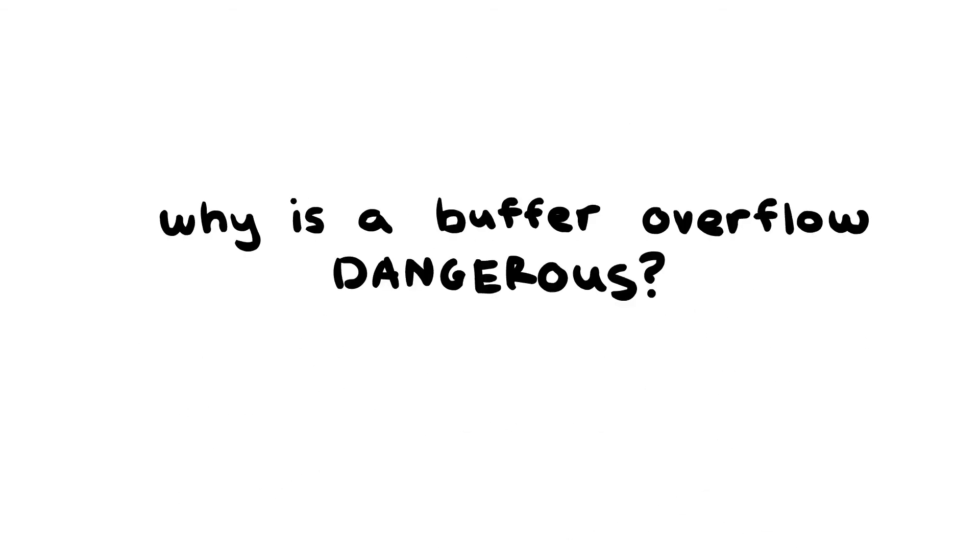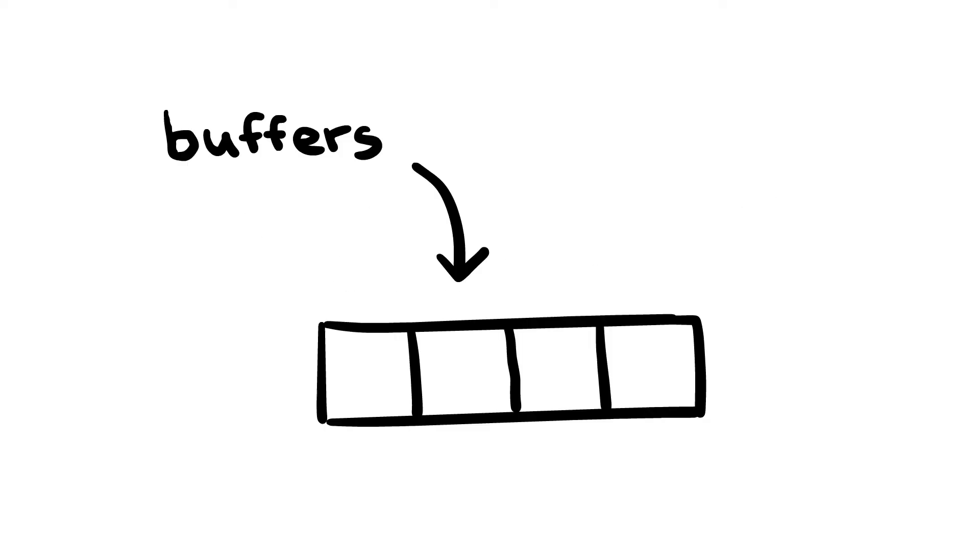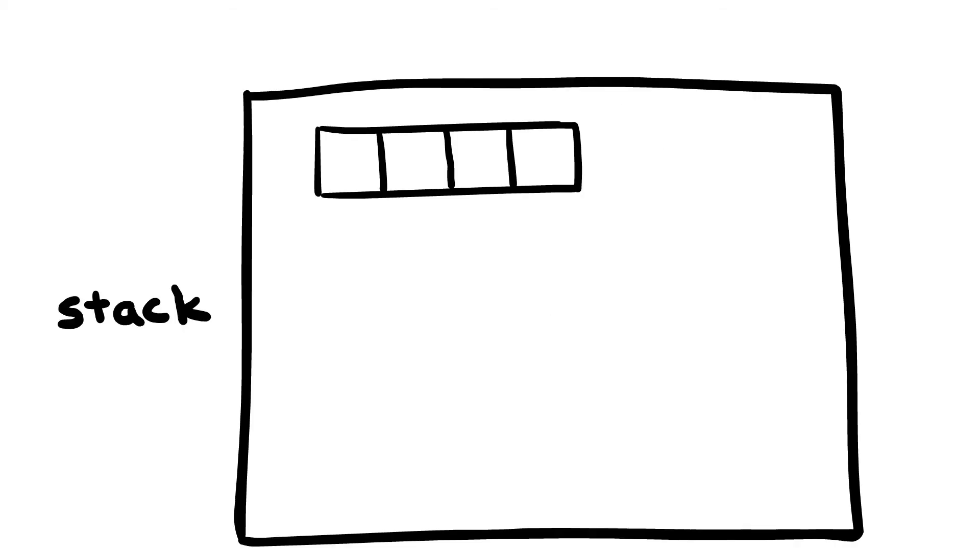Now that we've covered why buffer overflows can happen, let's talk about the damage they can do. Often, the buffers we're talking about are local variables, meaning they're going to be put in an area of memory called the stack. Remember when I said at the beginning that there was some important information that could be overwritten by a buffer overflow?